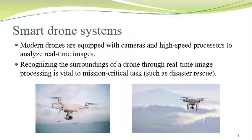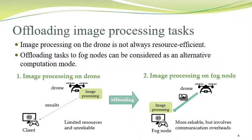Let me start with the background. Nowadays, smart drone systems are used in many application domains. Modern drones are equipped with cameras and high-speed processors to analyze real-time images. Using that real-time image analysis, recognizing the surroundings of a drone is essential for mission-critical tasks such as disaster rescue or surveillance. Image processing on a drone is not always resource-efficient because the drone's resources are limited, and sometimes battery life is also limited.